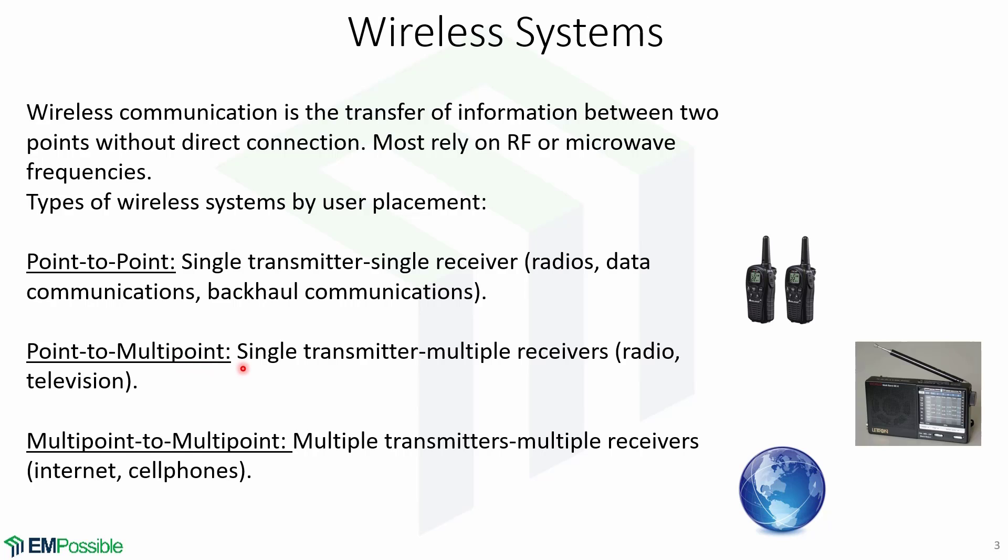Point-to-multipoint involves single transmitters and multiple receivers, like radio or television. And multipoint-to-multipoint systems involve multiple transmitters and multiple receivers, like internet and cell phones.